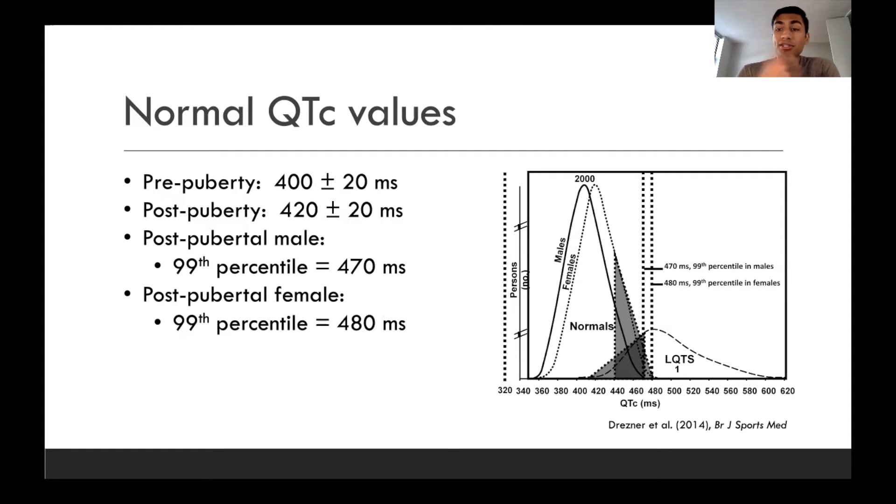So we know about QT interval, about the QTC, and so what are some normal values to think about for when we see a measurement? So pre-puberty, normal value is going to be 400 milliseconds plus or minus 20. Then after puberty, there'll be 420 plus or minus 20. And then in a post-pubertal male, the 99th percentile is going to fall at 470 milliseconds. So you can see where this lies. And then in females, the 99th percentile will be 480 milliseconds.